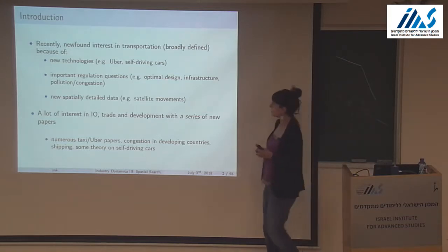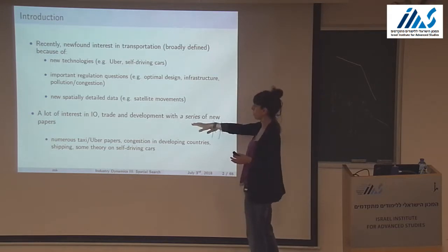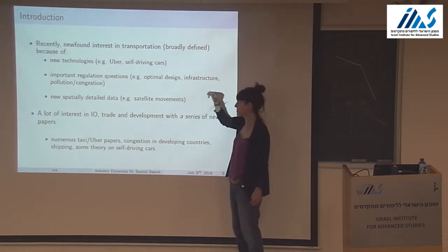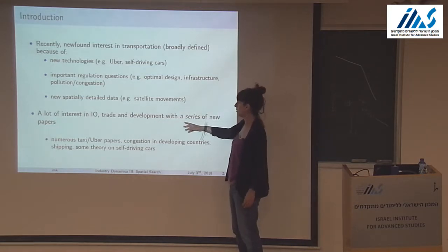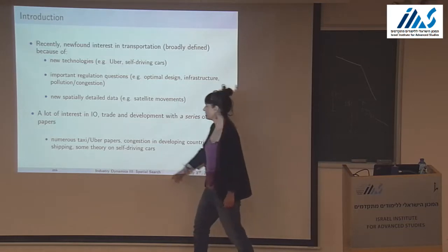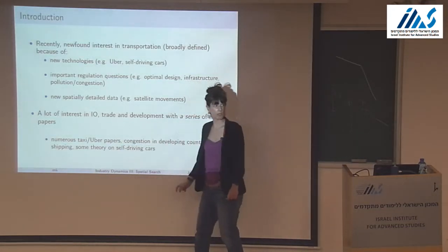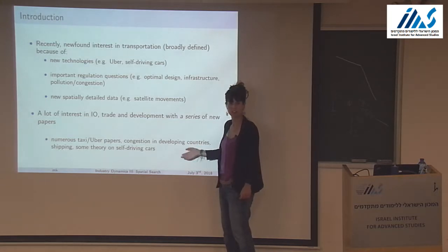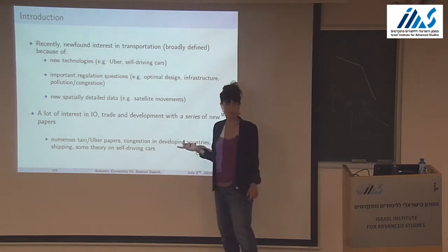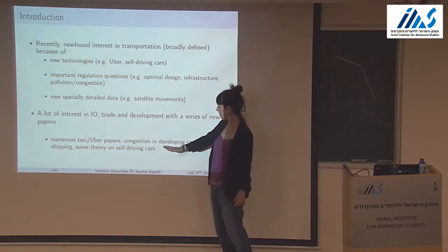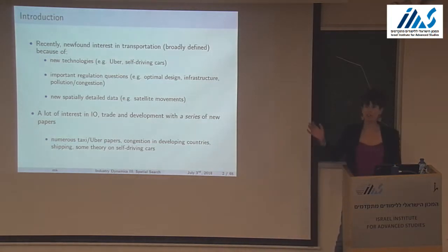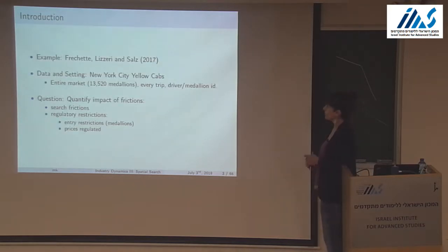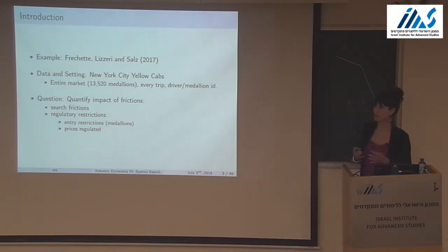You're going to see these issues in IO papers, trade papers, and theory on infrastructure and optimal design in development. There are already numerous taxi and Uber papers in labor and IO, congestion studies in developing countries, shipping papers, and new theory on self-driving cars. Two of the best development job market candidates this year looked at congestion — one in Bogotá and one in India.